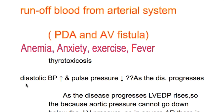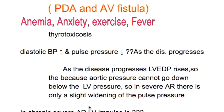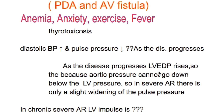Why does diastolic blood pressure increase and pulse pressure decrease as the disease progresses? As aortic regurgitation progresses, left ventricular end-diastolic pressure rises, and because aortic pressure cannot go below the left ventricular pressure, in severe aortic regurgitation there is only a slight widening of the pulse pressure.